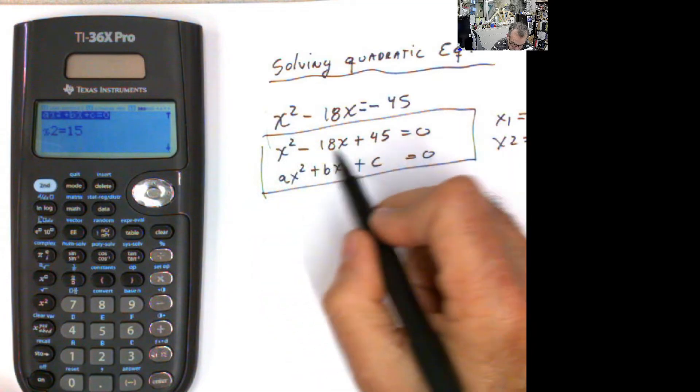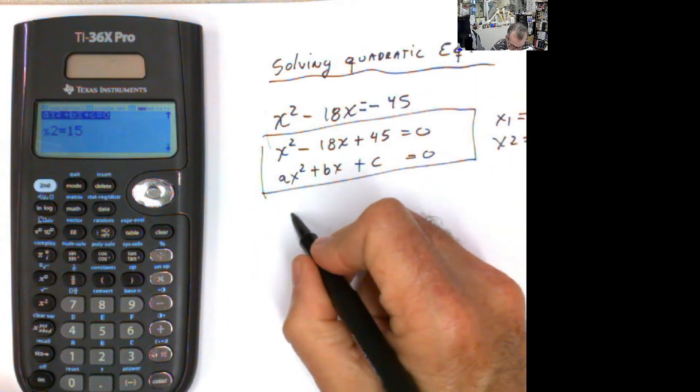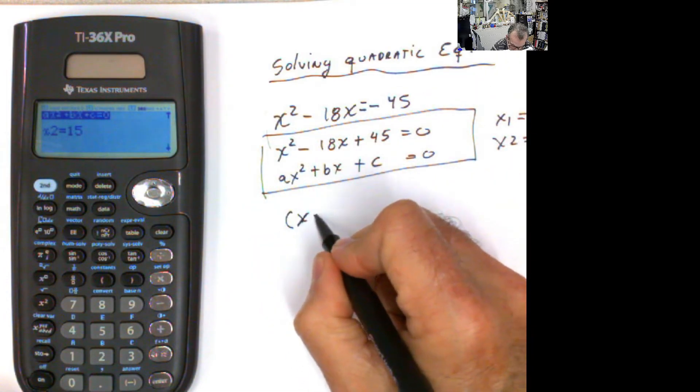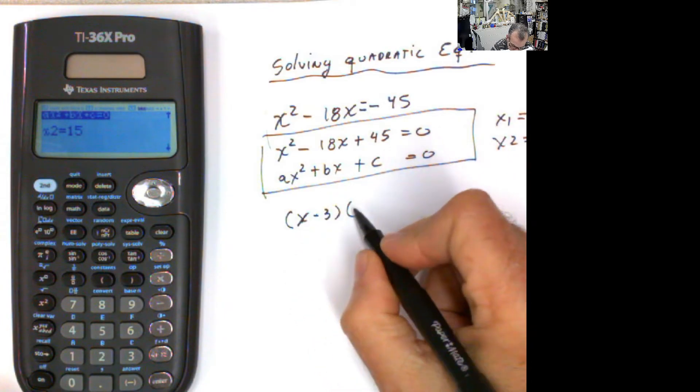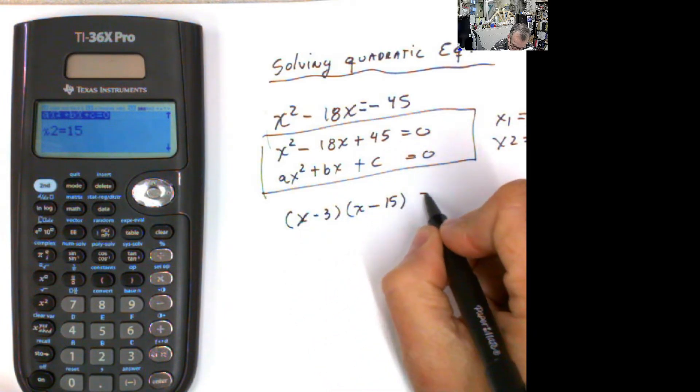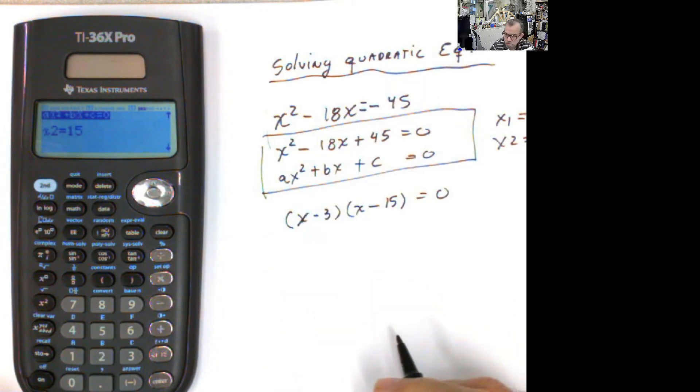If you need to factor this out for any reason, then you will factor it like x minus 3 multiplied by x minus 15 equals zero. And these will be the roots of the quadratic equation.